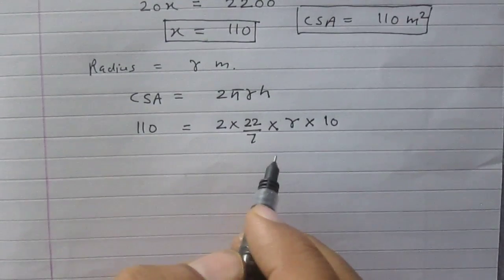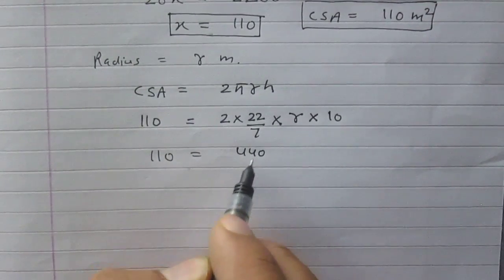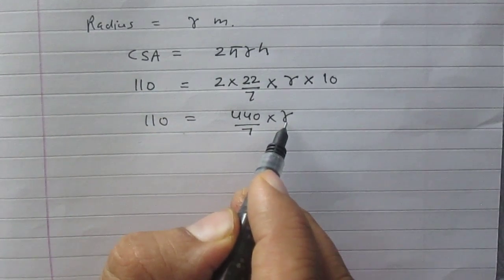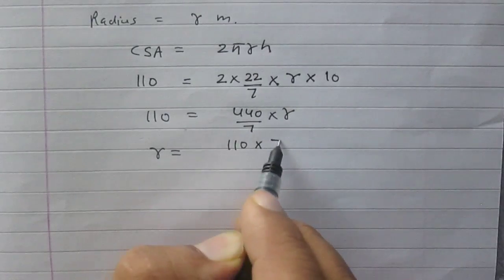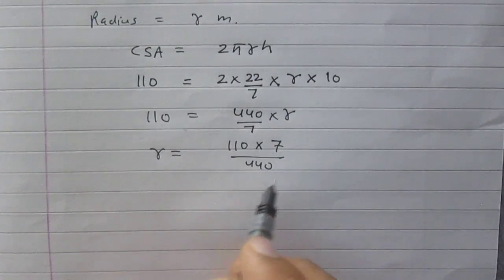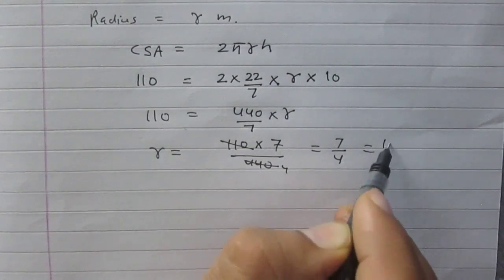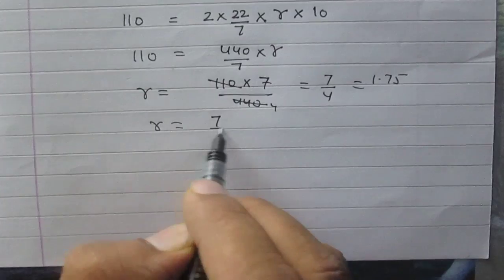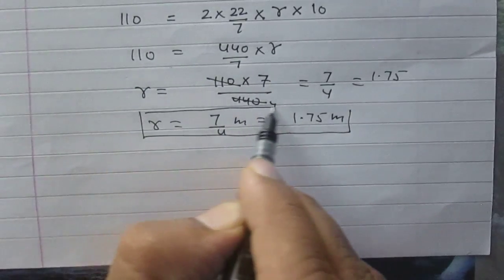So it is 110 = (440/7) × r. This is a linear equation in variable r. After calculation, we get r = (110 × 7) / 440, which gives the value of r = 7/4, that is, 1.75. So the radius of the base of the cylinder is 7/4 meter or 1.75 meter.